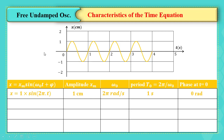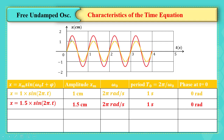If x = 1.5·sin(2πt), the amplitude is 1.5 cm, ω₀ is still 2π, and the period is still 1 second. The phase is also 0. So the only factor that changed is the amplitude, which increased by half. All other characteristics remain the same.